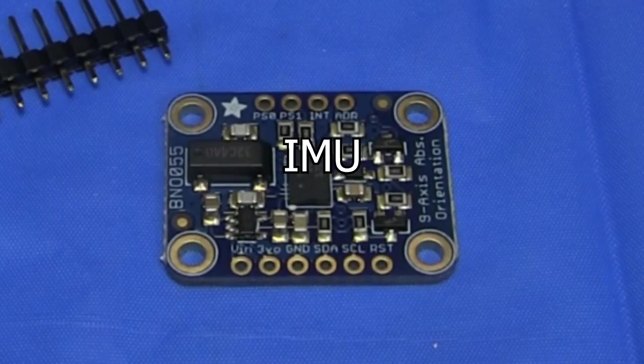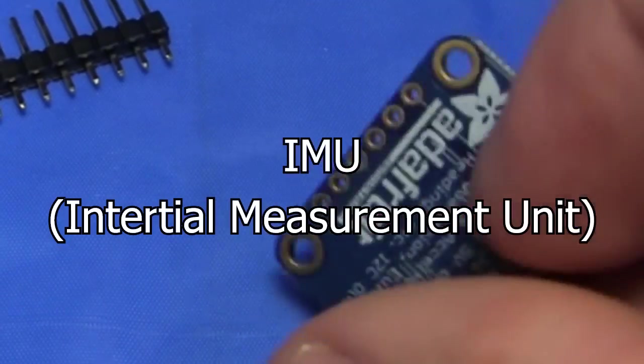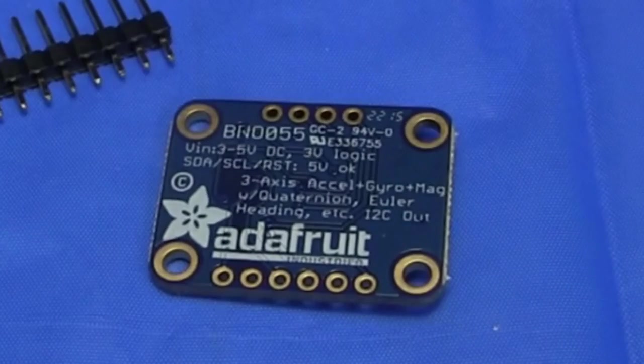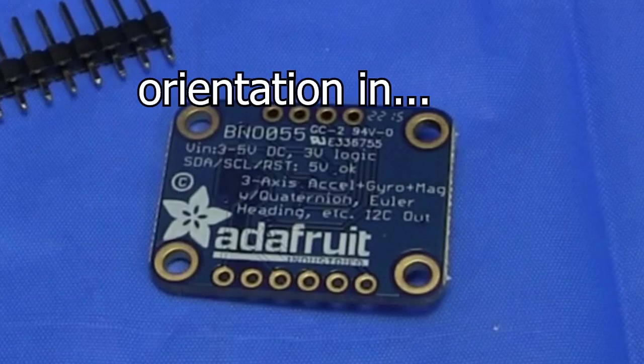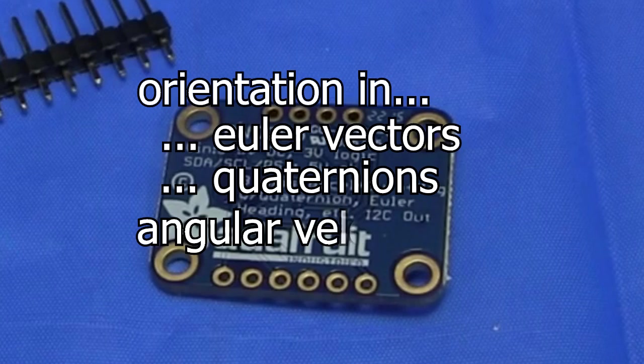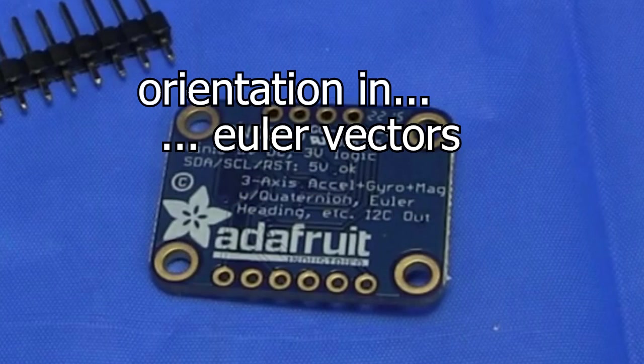An IMU, or Inertial Measurement Unit, basically tells you how the sensor is oriented in space. This one tells you a lot of things, such as the orientation using Euler vectors and quaternions, the angular velocity in all three vectors, and other things. I'm going to just use the orientation.